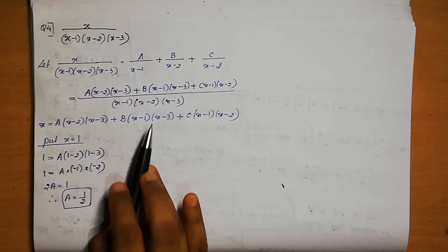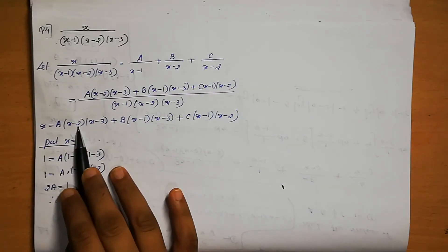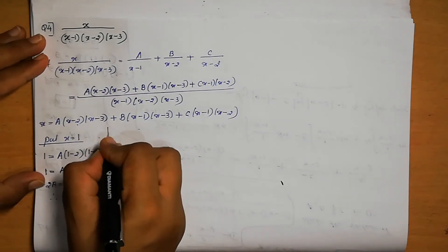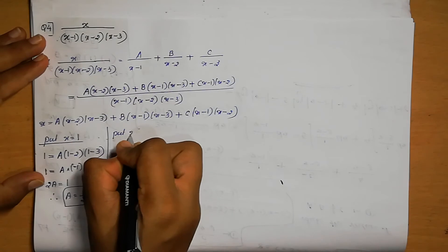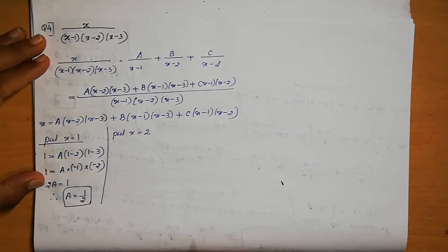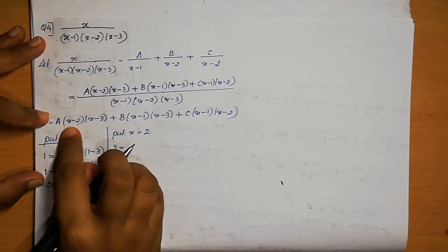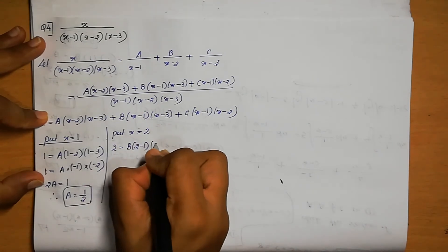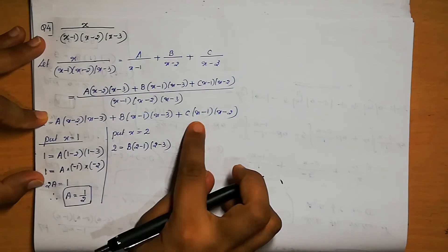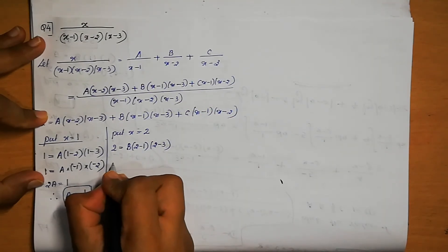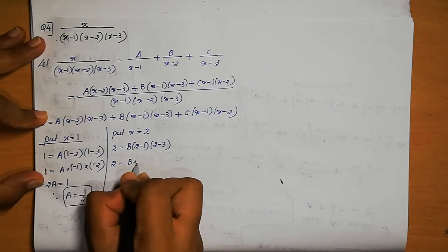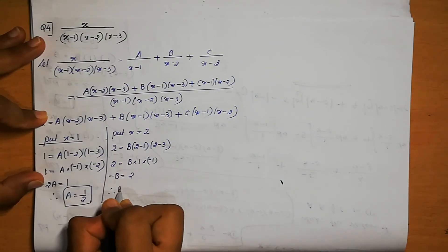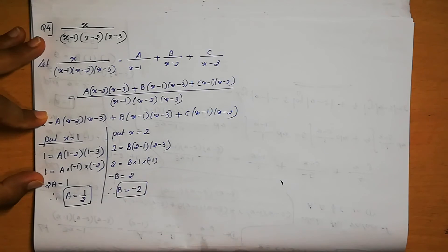Find B. Put x equals 2: 2 equals B(2 minus 1)(2 minus 3) plus 0. So, 2 equals B(1)(minus 1) equals minus B. Therefore, B equals minus 2.